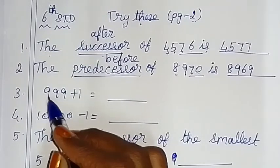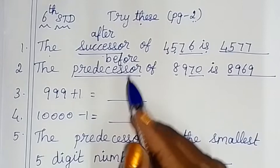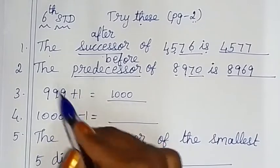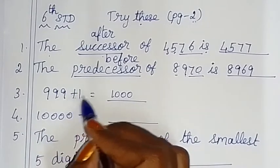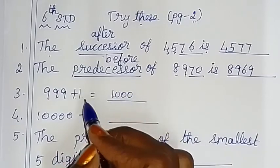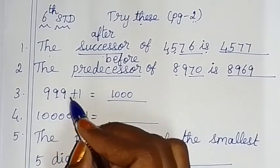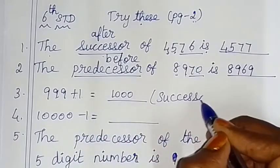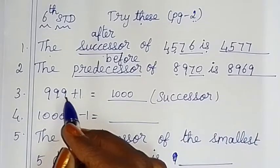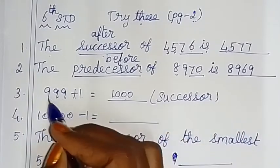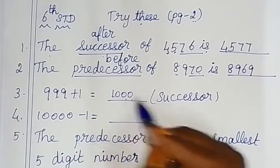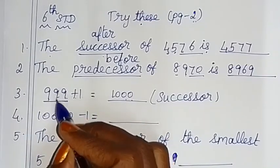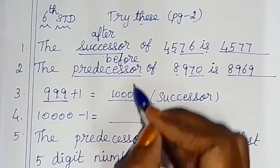Now let's check the sum: 999 plus 1. We need to count on — this is the successor. So 999 plus 1 is equal to 1000. This is the greatest three-digit number, and 1000 is the smallest four-digit number.